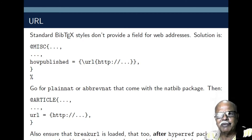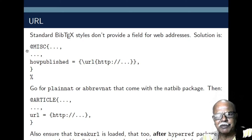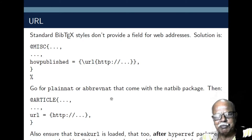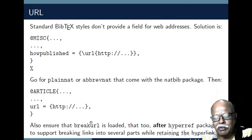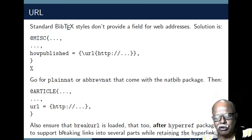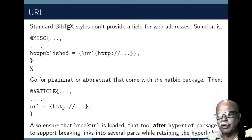One major problem with standard BibTeX style is that it does not accept web addresses. One possible solution is to use the @misc entry type with howpublished field. Or, if you are using the natbib package, you can use plainnat or abbrvnat styles that come with the natbib package, and even within the article field you can use url = {address}. One very important point is that in such a case, you have to ensure that breakurl is loaded after the hyperref package to support breaking links into several parts while retaining the hyperlink.